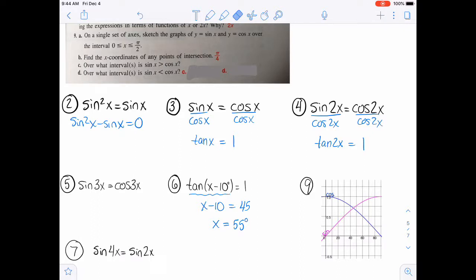And then it says on what intervals is sine greater than cosine. So sine is the pink one and it is greater over here. So then that's from 45 to 90. Or in this case, they're going to say pi over 4 up to pi over 2. And then for the last one here, over what interval is sine less than cosine. So that's the pink being smaller or below the blue. So that's going to be from 0 to 45. Or 0 to pi over 4.